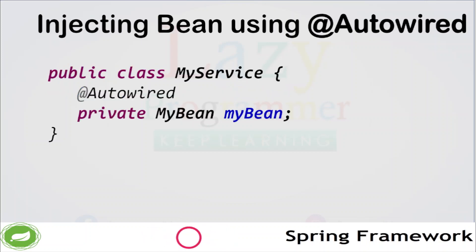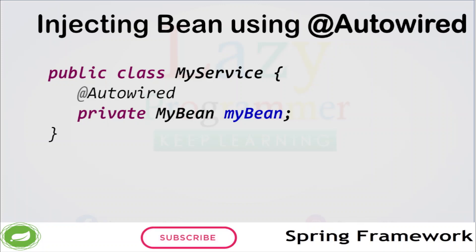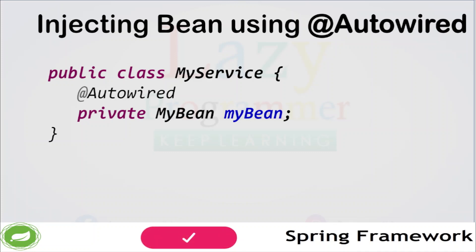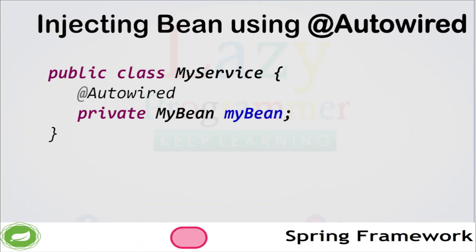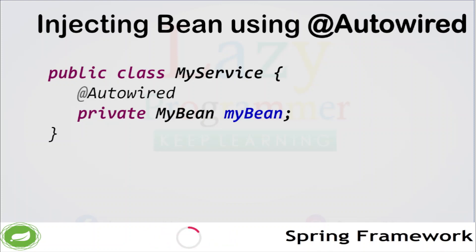Now that we know how to define Spring Beans, let's talk about how they are used in the Spring Framework. One of the main benefits of using Spring Beans is that they can be easily injected into other objects through dependency injection.